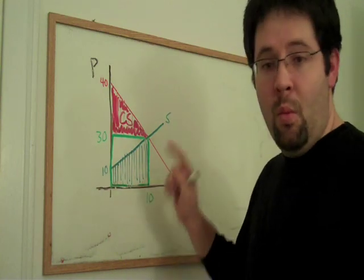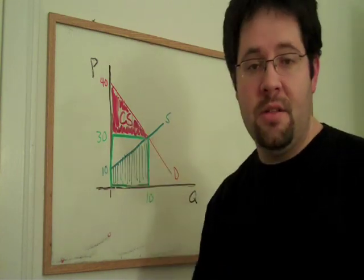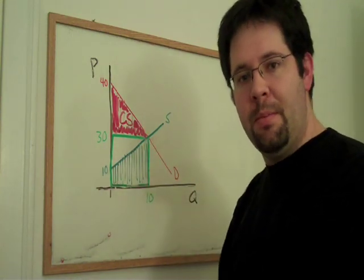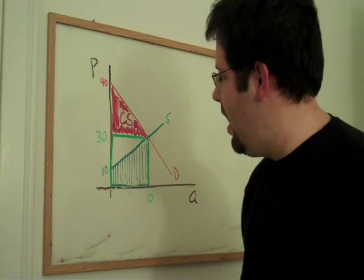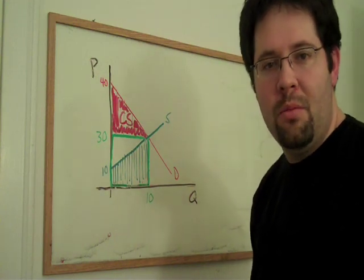Now what you'll see is that what the consumers paid in this market goes to the suppliers. And you can see that they get an excess, they get a surplus as well. And that's what we'll call producer surplus.